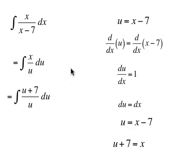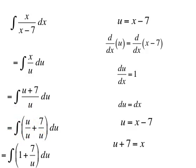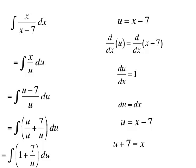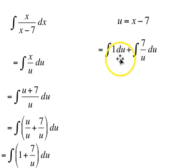We have a common denominator, so let's break this up into u over u plus 7 over u, all times du. But u over u is just 1, so we get the antiderivative of 1 plus 7 over u du. This is a sum of two functions, and the antiderivative of a sum is the sum of the antiderivatives: the antiderivative of 1 du plus the antiderivative of 7 over u du. The derivative with respect to u of u is 1, so the antiderivative of 1 is just u.